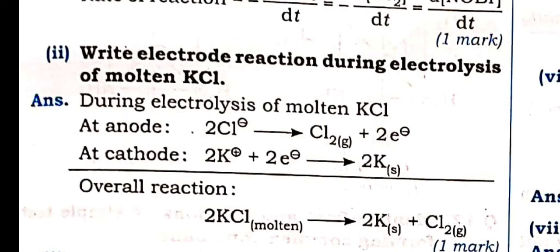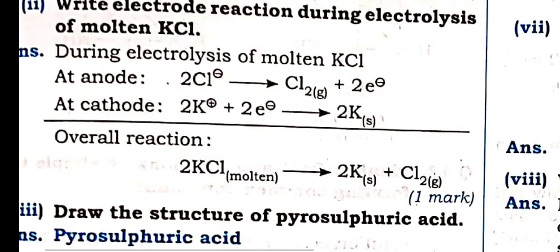Now, the electrode reaction in molten NaCl from electrochemistry — already we have seen. But here they have asked KCl in place of sodium. We have to write potassium, that is K⁺. All the reactions will be same. Reaction will be same — you can just have a look.